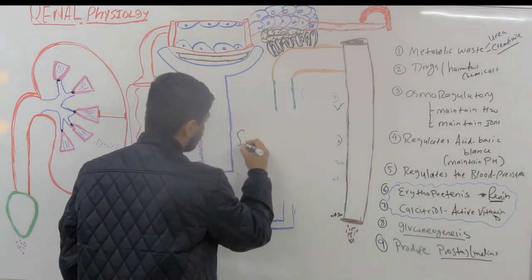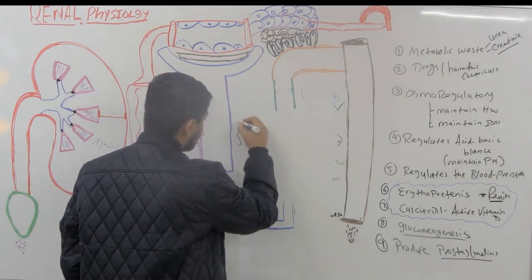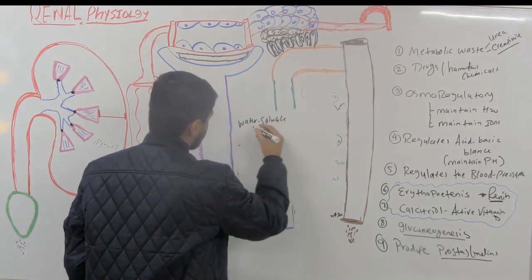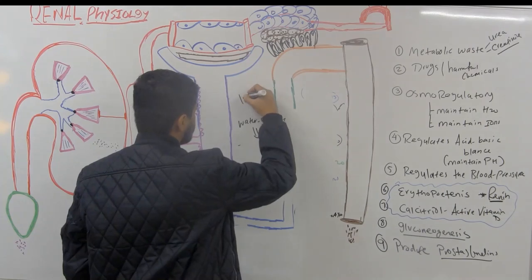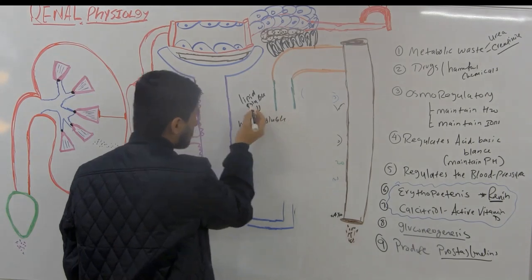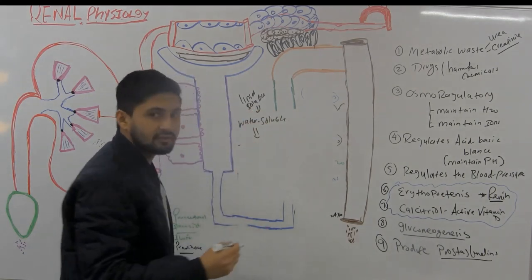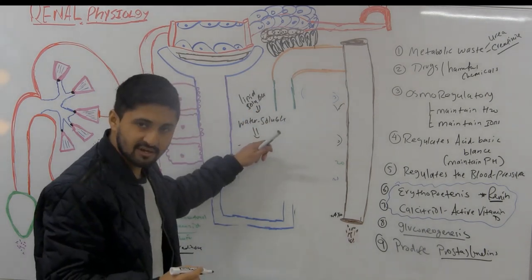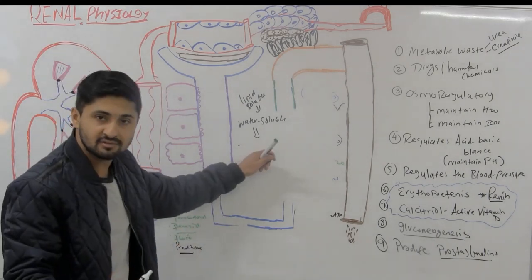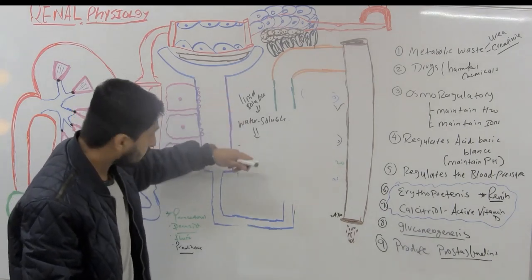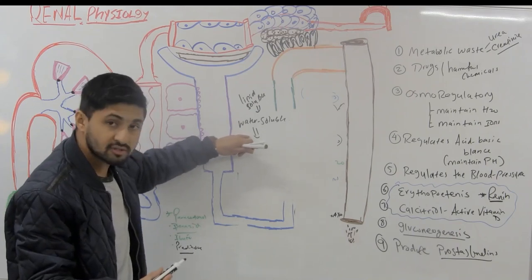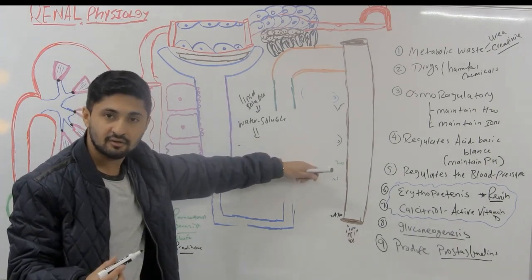Biotransformation basically means converting all these highly liposoluble drugs into water-soluble drugs, so they have to be water-soluble for the kidney to get excreted out. Drugs like paracetamol, isoniazid, ibuprofen, prednisones, and even morphine all have to be water-soluble before they can be excreted.